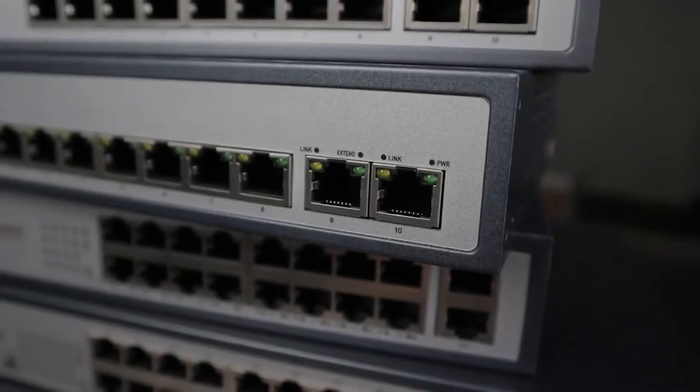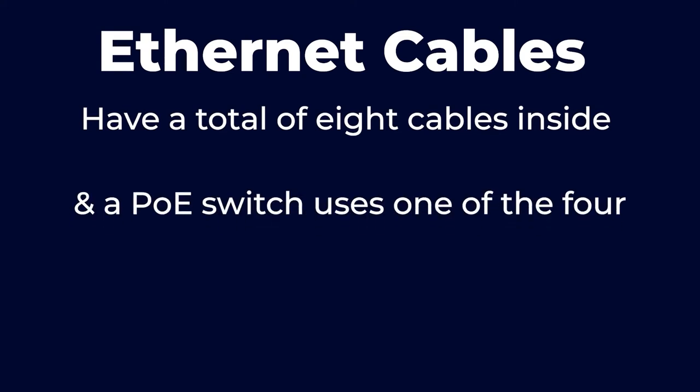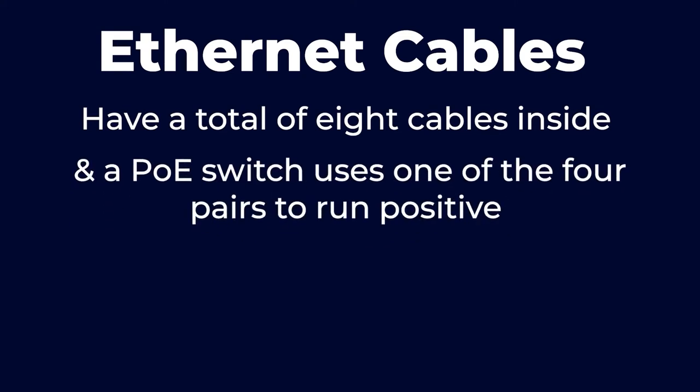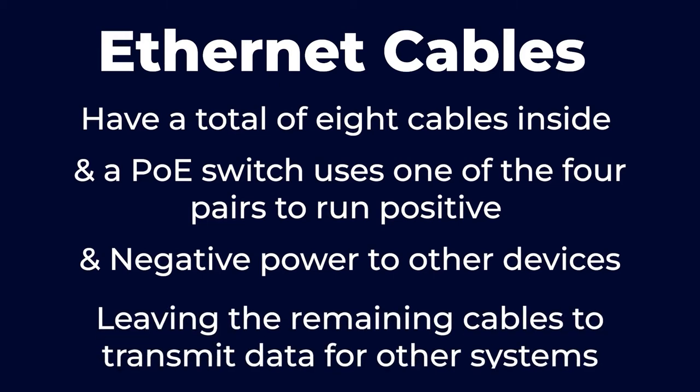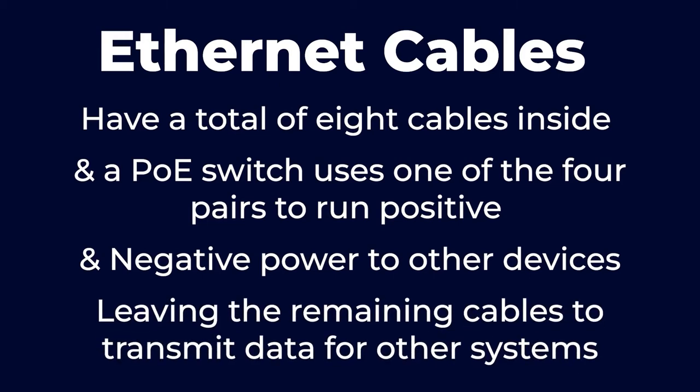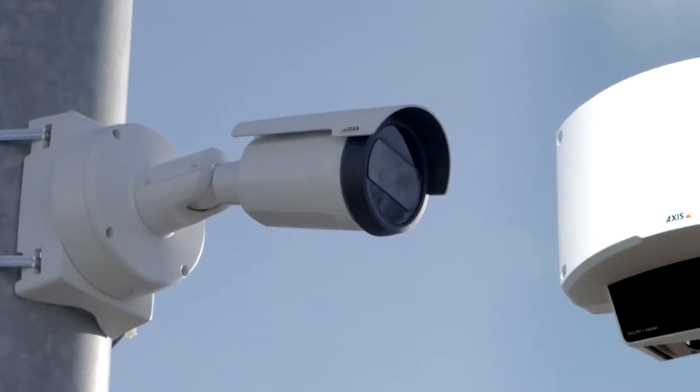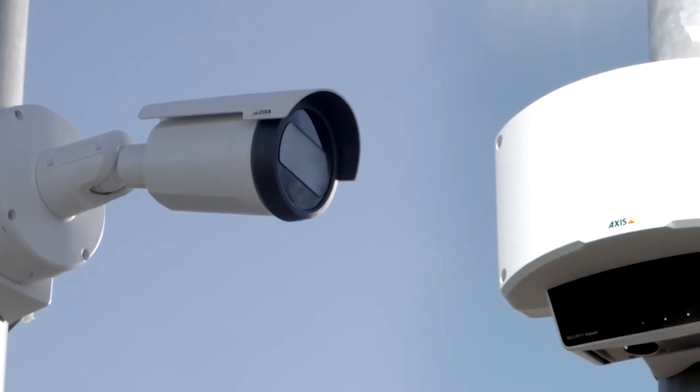But how does this work? How can one cable transmit both power and data? A PoE switch draws its power from a three-prong jack that plugs into your standard wall outlet. The switch then converts this power into a lower voltage power source and sends it out over the Ethernet to devices on a network. Ethernet cables have a total of eight wires inside, and a PoE switch uses one of the four pairs to run positive and negative power to other devices, leaving the remaining cables to transmit data. A PoE allows engineers to locate IP cameras and wireless access points where they are needed most and enables them to easily move these devices as necessary.